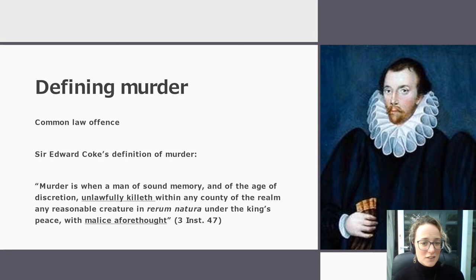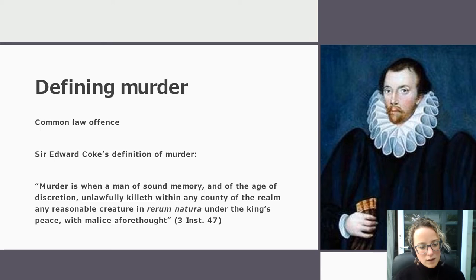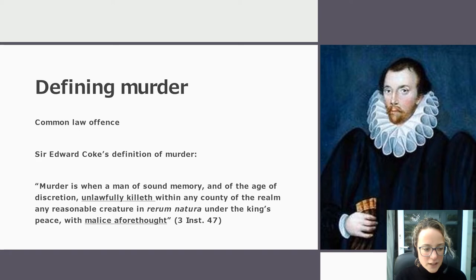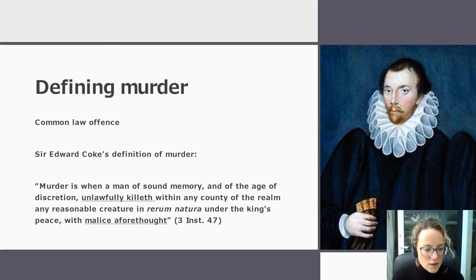What that means is that parliament would have legislated and set out the offence in an act of parliament, as opposed to judges in the courts defining and setting out the offence as part of their judgment — so that's quite an interesting feature about this law. The definition of murder that we use today, albeit with a few tweaks in the language, is one that was established in the 17th century by Sir Edward Coke, and you can see it here on the screen: 'Murder is when a man of sound memory and of the age of discretion unlawfully killeth within any country of the realm any reasonable creature in rerum natura under the King's Peace with malice aforethought.'